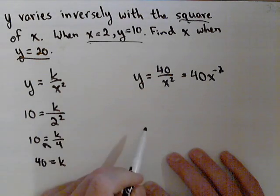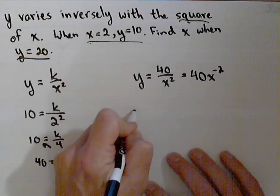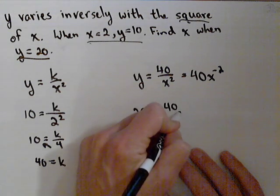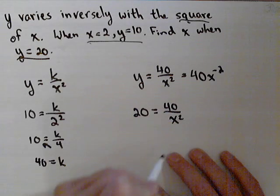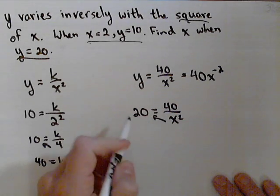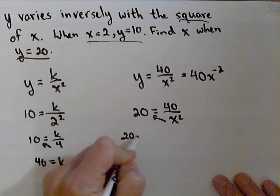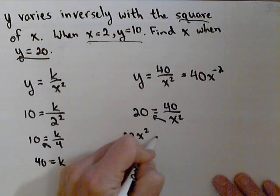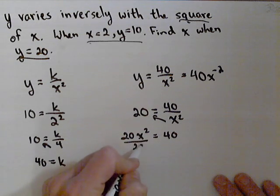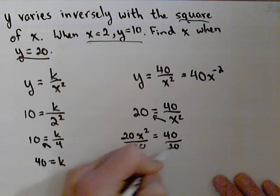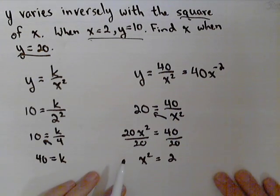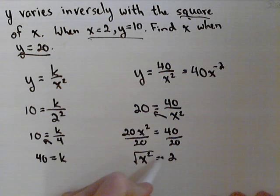Now, the other part is we're asked to find x when y is 20. So we have 20 equals 40 over x squared. What I'm going to do is cross multiply the x squared, so I get 20x squared equals 40. Divide both sides by 20. I get x squared equals 2, and the last step is to square root both sides.